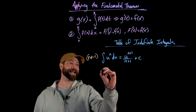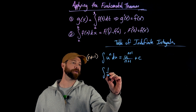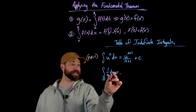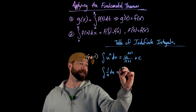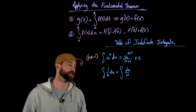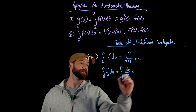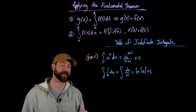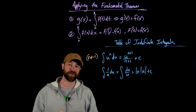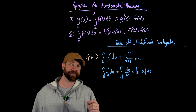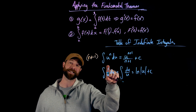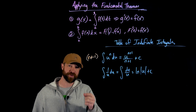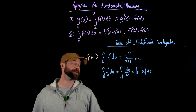Moving on to the case when n is negative one: that would be the integral of one over u du, which we can also write as du over u. The antiderivative of one over u is the natural log of u — though importantly, we write the absolute value around the argument of the natural log. This is because there are no domain restrictions outside of zero for one over u, whereas natural log naturally only takes in positive values. So in order for these domains to match up, you need the absolute values around the natural log.